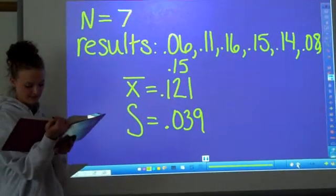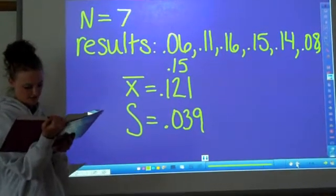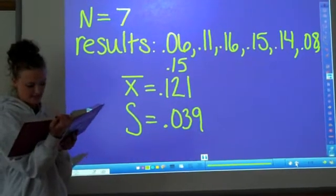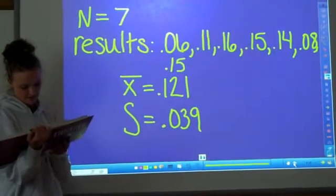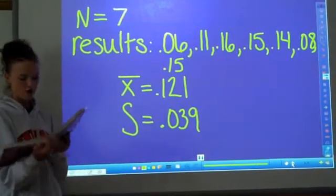Assuming that this sample is representative of the cars in use, construct a 98% confidence interval estimate of the mean amount of nitrogen oxide emissions for all cars.